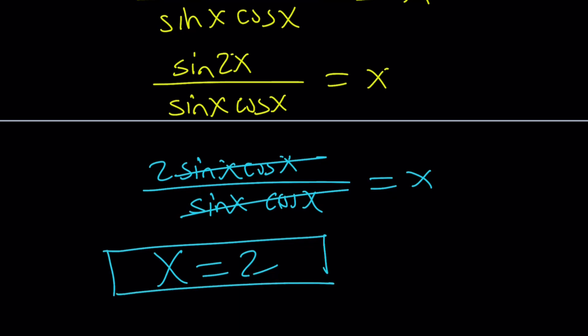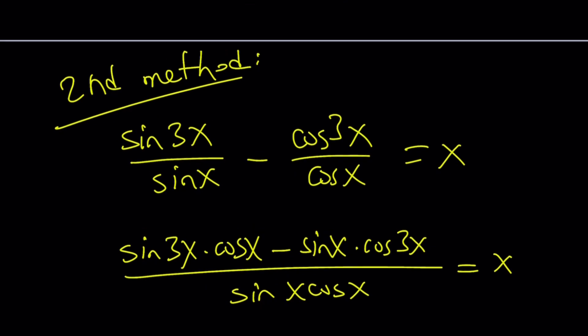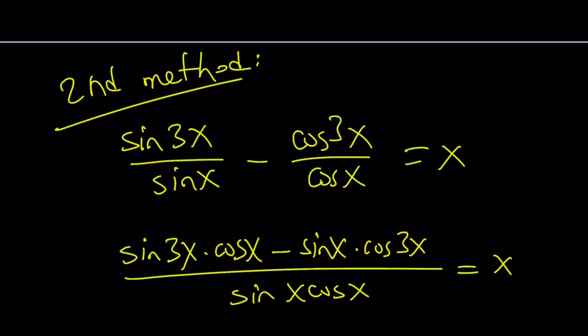Great. So, here's the question. If x equals 2, then what's x? And the answer is 2. So, x = 2. So, with the second method, we used a very nice identity. If you just ignore the x on the right-hand side, because that was my addition, originally the problem was something like, okay, can you simplify this?